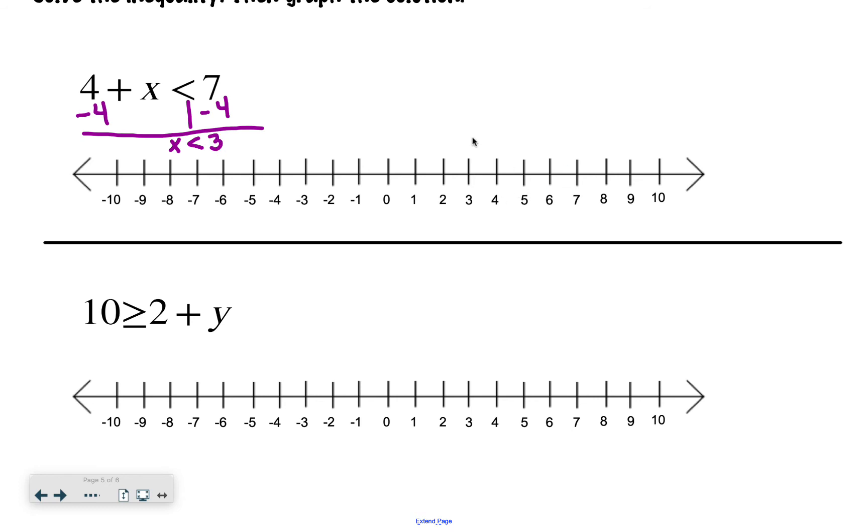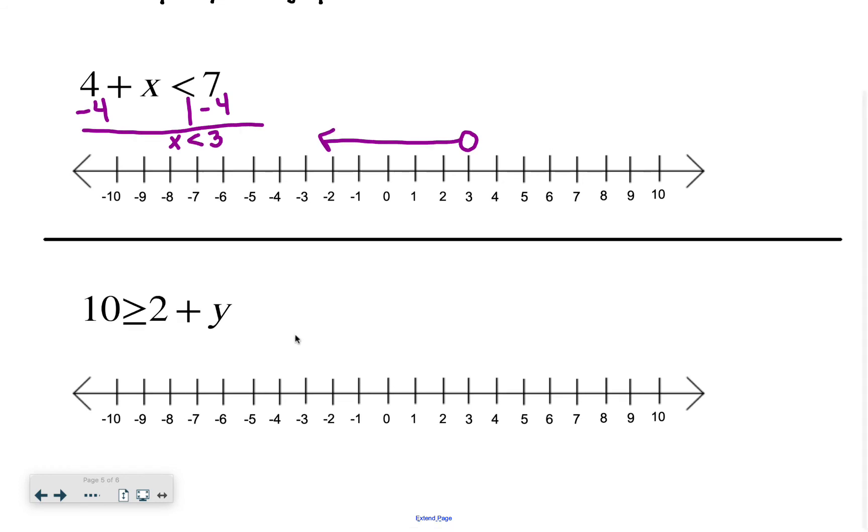So I would do an open circle at 3, because it's just less than. It's not less than or equal to. And then my numbers that are less than 3 are going this way on my number line. Let's try another one.